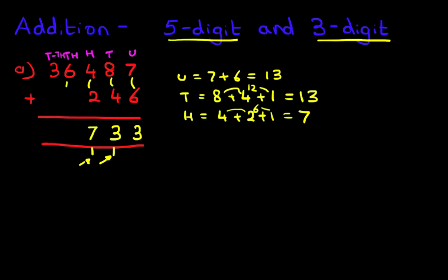Now the thousands column, we've got six plus zero, the answer is six. The ten thousands, we've got three plus zero, the answer is three. So the answer to our question is 36,733.